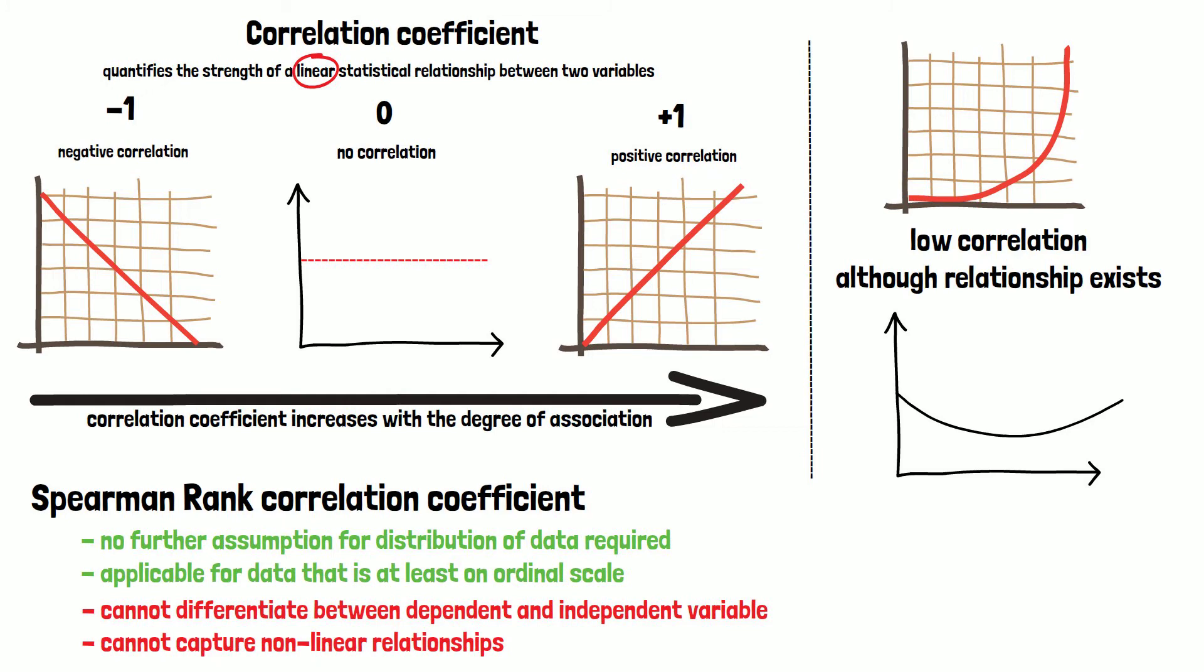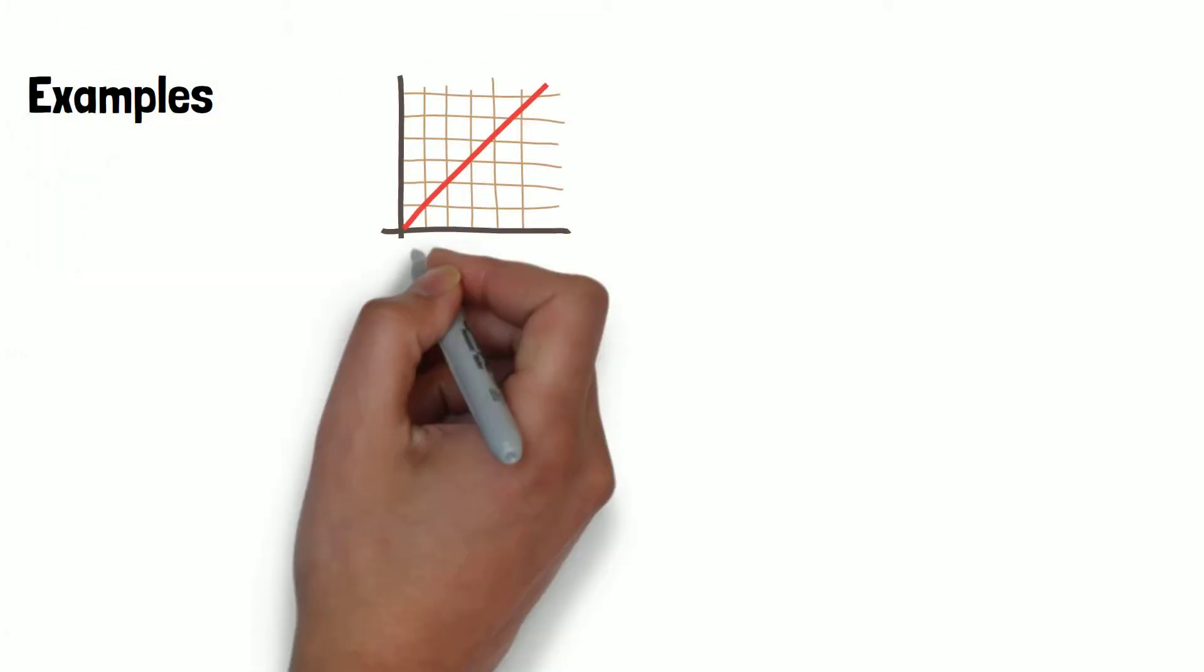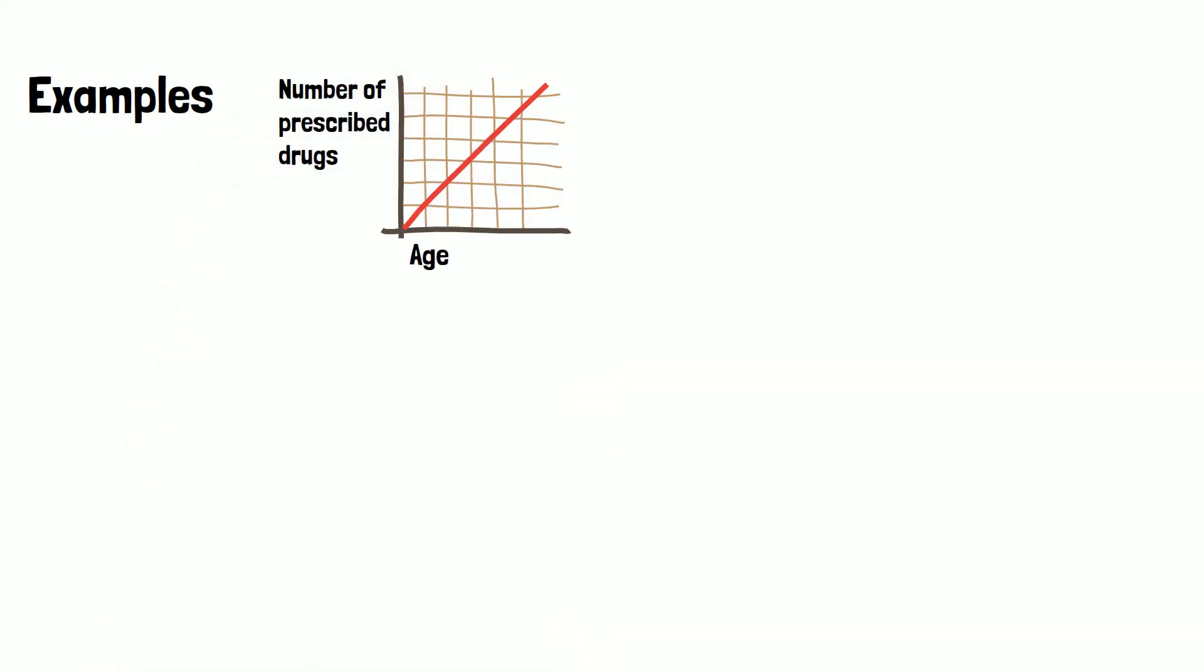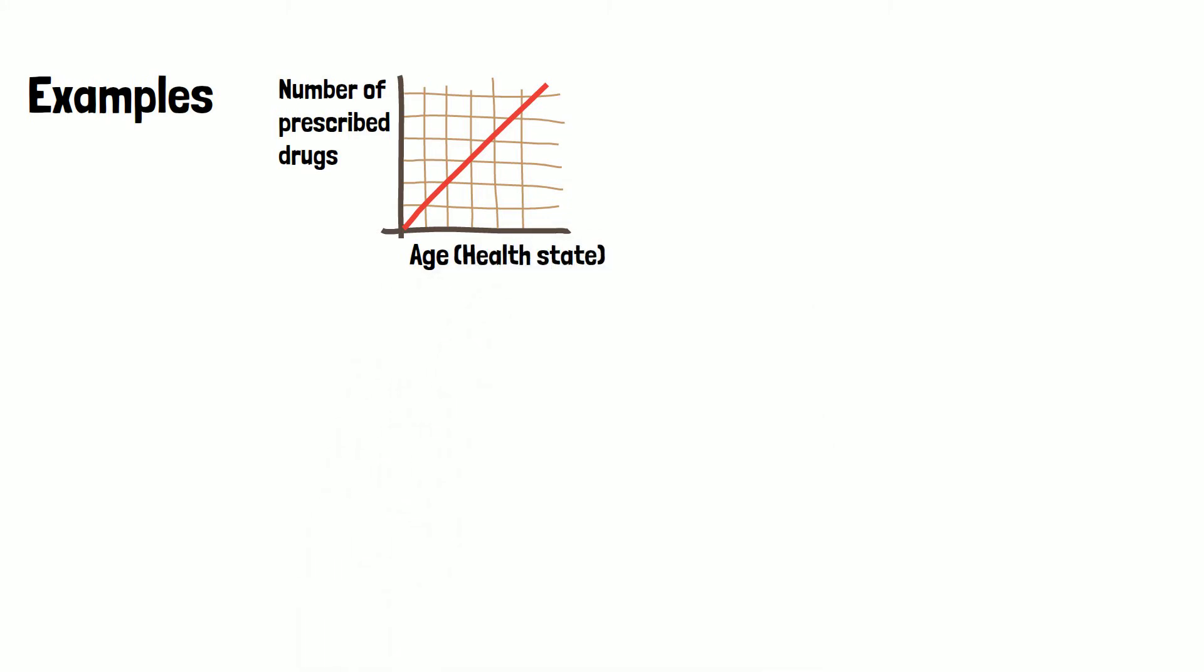Let's look at some examples. A positive relation would be given, for example, when looking at the correlation between age and number of prescribed drugs. The causal connection here, of course, is the health state. The older the people get, the more diseases they have, and therefore, the more drugs are prescribed by the doctors.